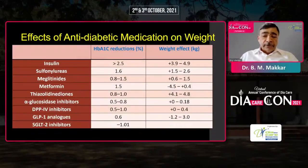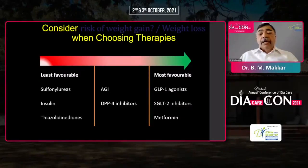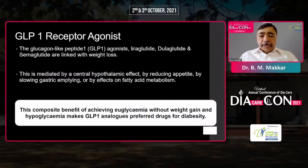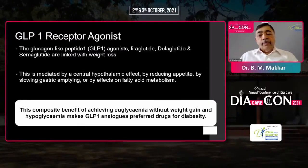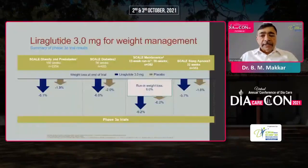This slide shows the weight gain potential of various drugs. We should prefer drugs which are able to induce weight loss. The preferred drugs are, in addition to metformin, the GLP-1 receptor agonists or SGLT-2 inhibitors. If a person is not able to take any of these, then other options are AGIs and DPP-4 inhibitors, which should be the preferred drugs. GLP-1 receptor agonists now have fantastic data — they have a composite benefit of achieving euglycemia without weight gain and without causing hypoglycemia.